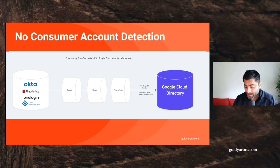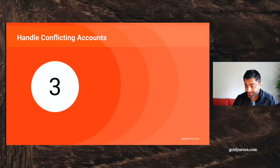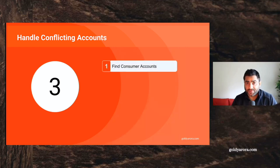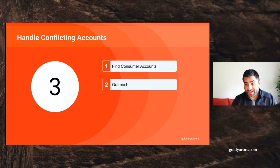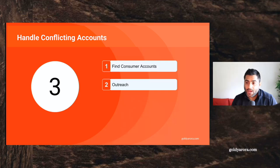So what should you do as a solution, since the Directory API does not detect consumer or conflicting accounts? Number one: find consumer accounts that are created with your corporate email address. You can easily do that by leveraging the Transfer Tool utility — I will link my video where I showed you how to find consumer accounts in your Google Admin Console. Once you have the list of these consumer accounts, preferably as a downloaded CSV, you should do your outreach — reaching out to all these users via your internal survey tool or whatever internal mechanism you have, asking whether these consumer accounts have any corporate data inside them.